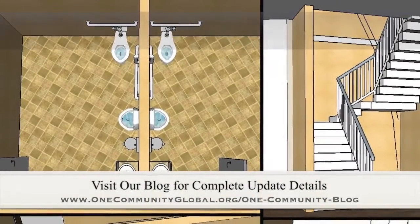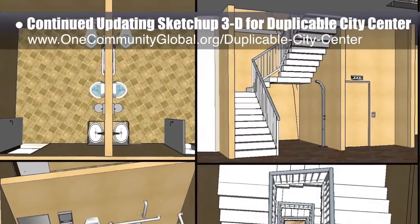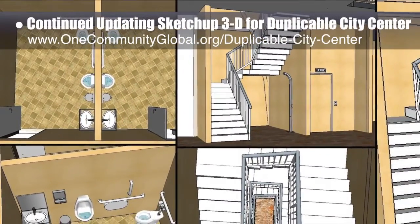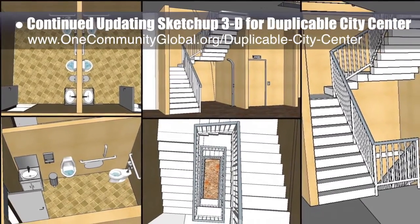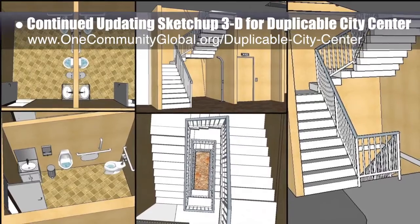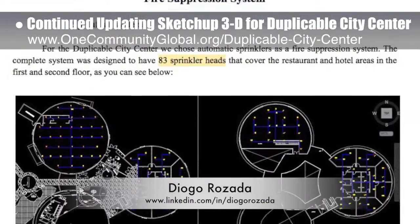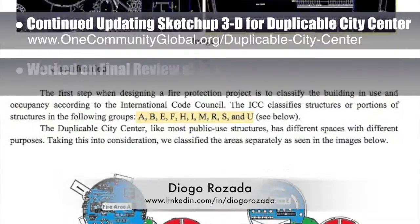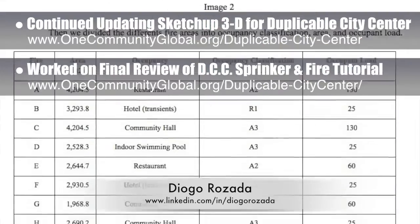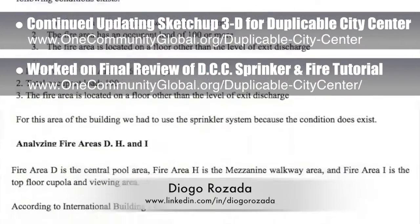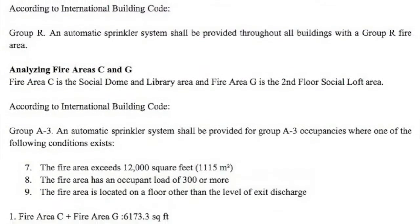This week the core team continued updating the SketchUp 3D for the Duplicable City Center, working on the bathrooms next to the elevator, redoing the stairs and rails for the elevator area, and making corrections to the first and fourth floor structure around the stairs area. We'd say we're now 50% complete with the total 3D update. We also worked behind the scenes with Jogo Rosada, a civil engineering student specializing in hydraulics, to complete a final review of the edits to the Duplicable City Center's sprinkler and emergency fire system designs and tutorial.